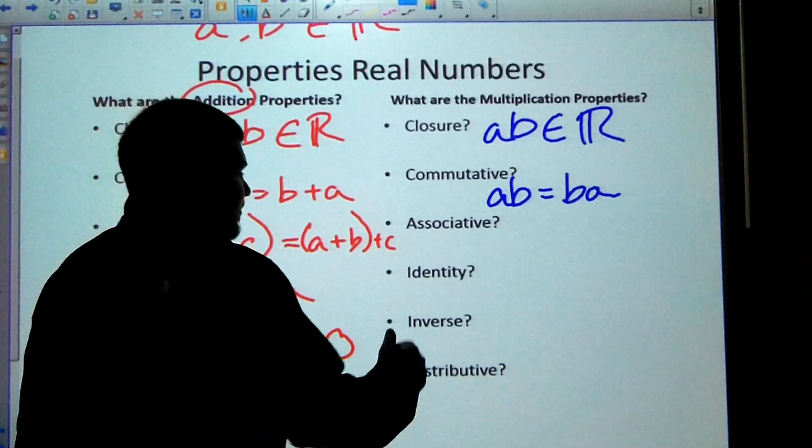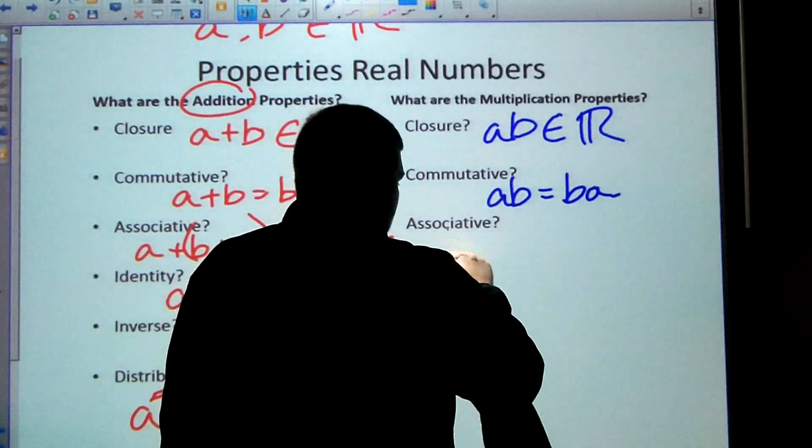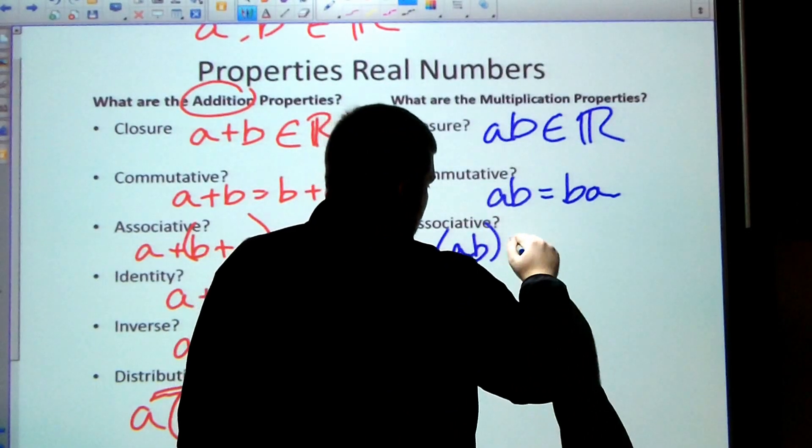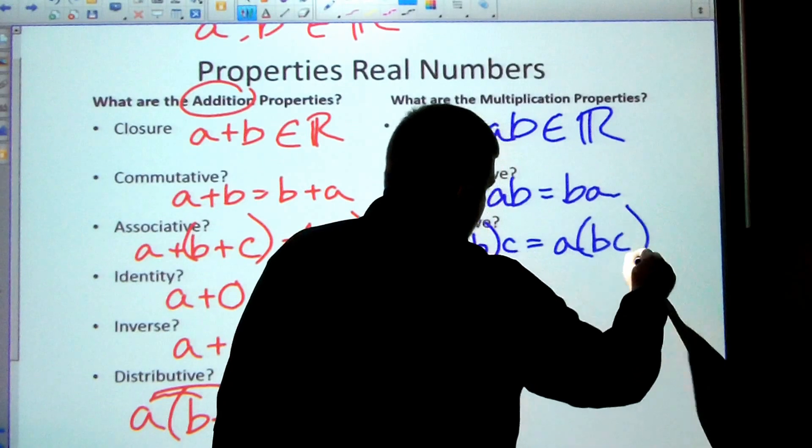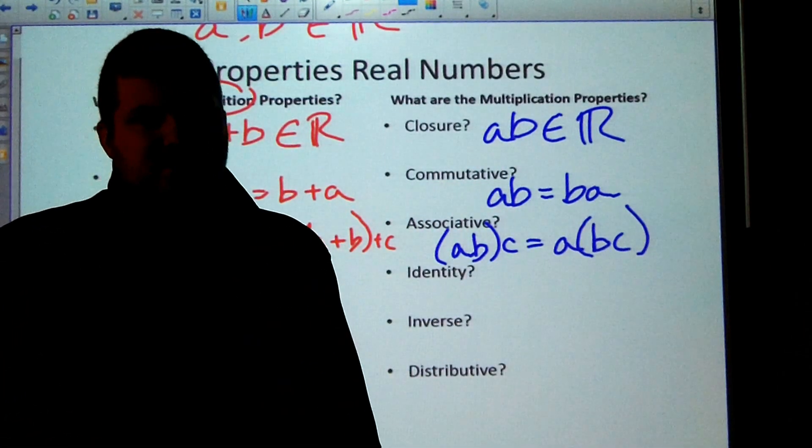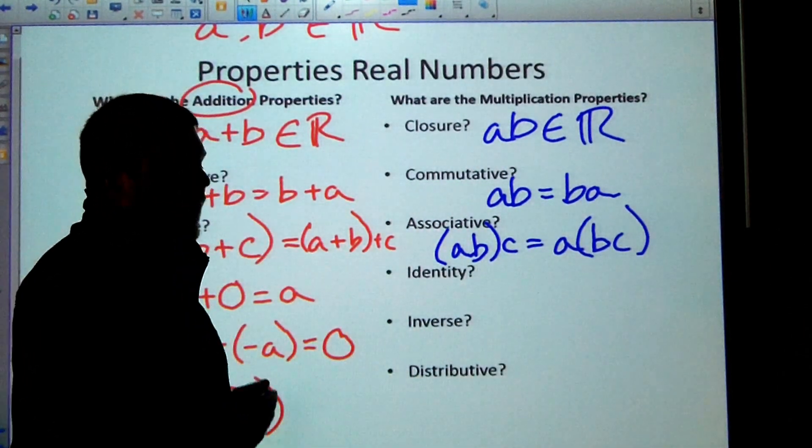The commutative property says that multiplication, the order, does not matter. So AB is equal to BA. Associative property, that's by grouping. When you see associative, you need to think grouping, which means parentheses. So (AB)C is equal to A(BC). The way I group things doesn't matter.